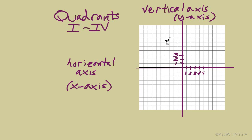The extra lines and boxes you see are just because we're using graph paper. The coordinate plane is made up of just a horizontal and a vertical axis; the boxes make it easier to plot points. When we plot points, we are plotting two numbers at the same time — rather than just picking a number on the horizontal axis or a number on the vertical axis, we place a point that represents a number on each axis.